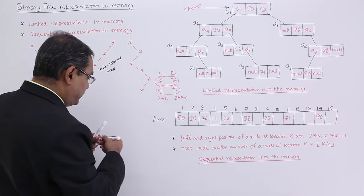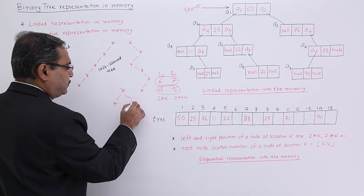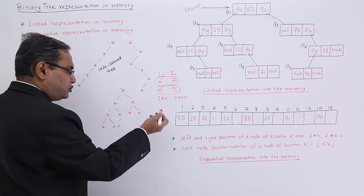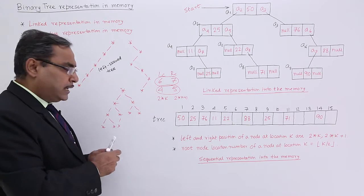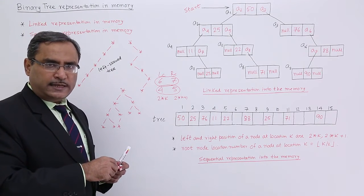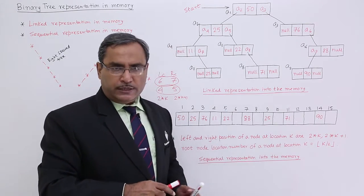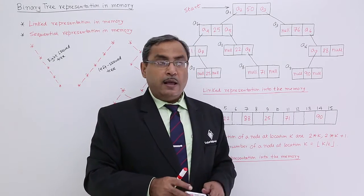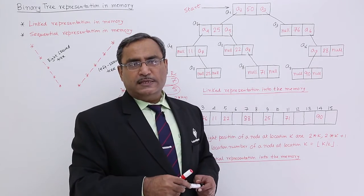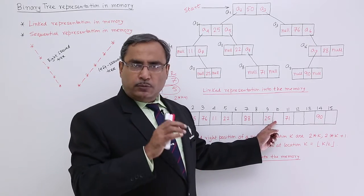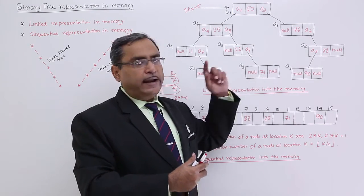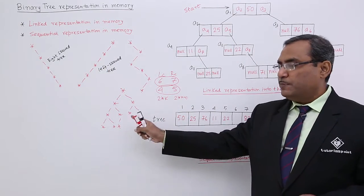In case of a complete binary tree, up to the last but one level all levels have the maximum number of nodes, and from the extreme left through to the last node there should not be any missing node. In case of complete binary tree, I can go for linear representation because there will be no blank space throughout the array. But if you go for linked representation, due to the link fields, some memory space is wasted — you are occupying memory to hold info plus the left link address and the right link address — so it occupies more memory compared to sequential representation.